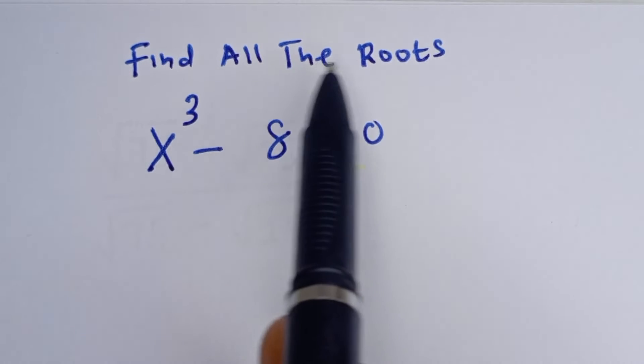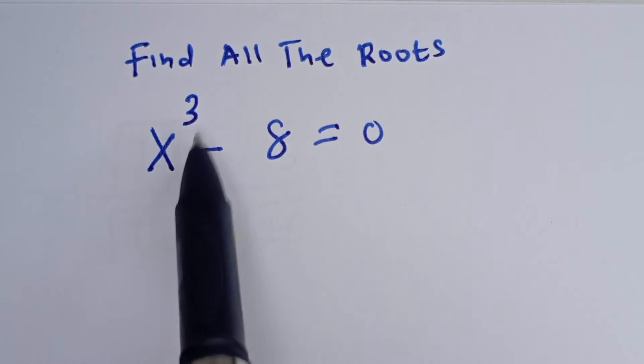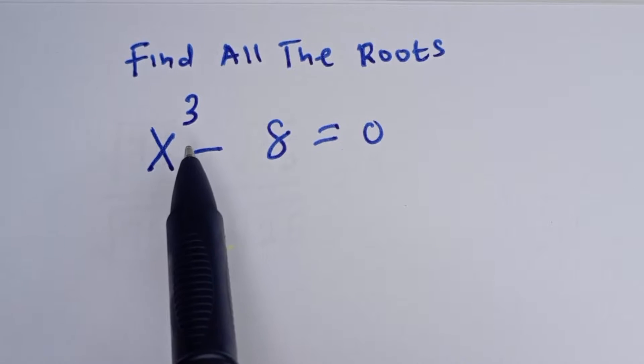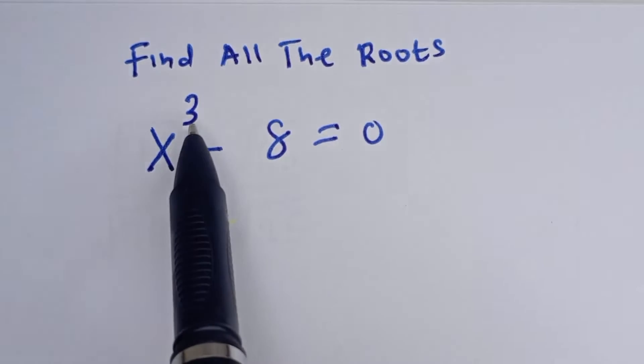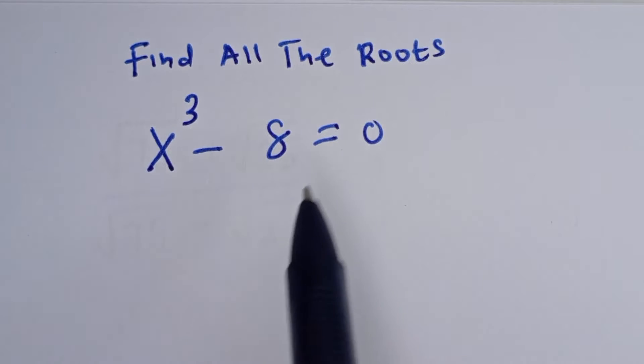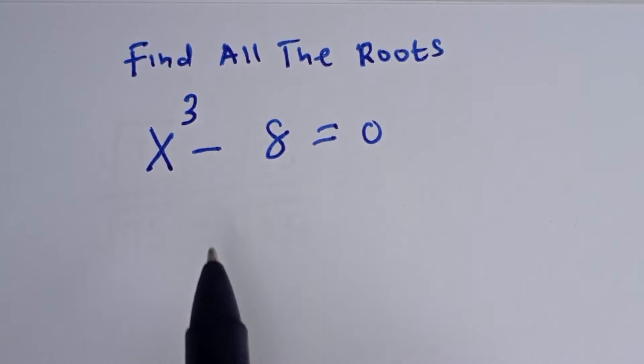Hello. How to find all the roots in this cubic equation: s to the power of 3 minus 8 is equal to 0.